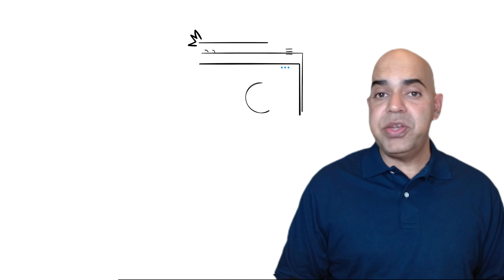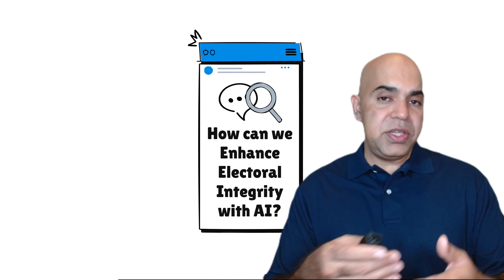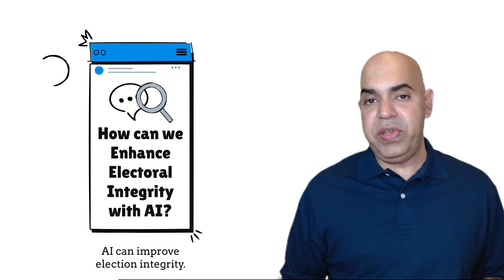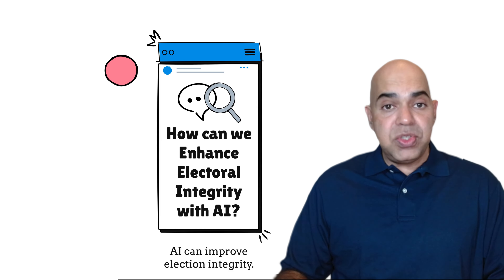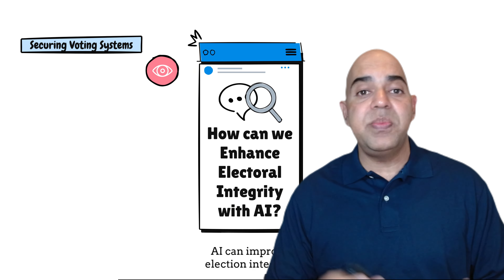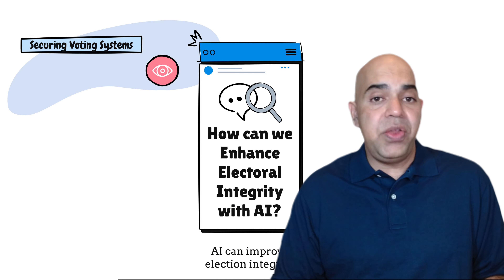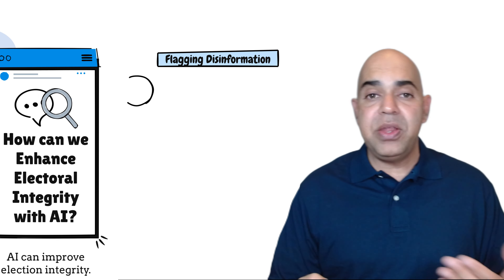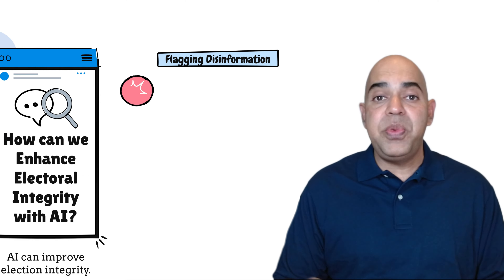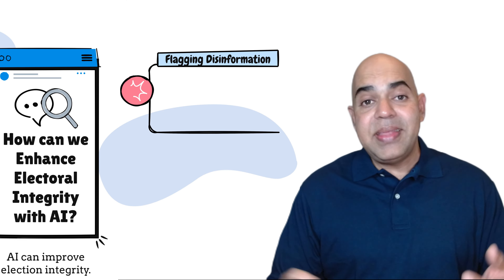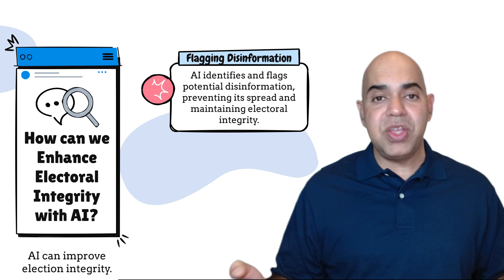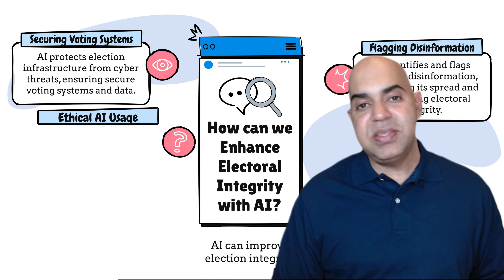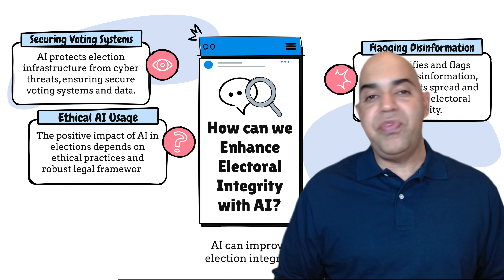How can we enhance electoral integrity with AI? Despite its potential for misuse, AI can also enhance the integrity of elections. AI can be used to secure election infrastructure from cyber threats, assuring the security of voting systems and data. Additionally, AI can flag potential disinformation, helping to prevent its spread and protect the integrity of the electoral process. The impact of AI in this context depends on how it is used, emphasizing the importance of ethical practices and robust legal frameworks.